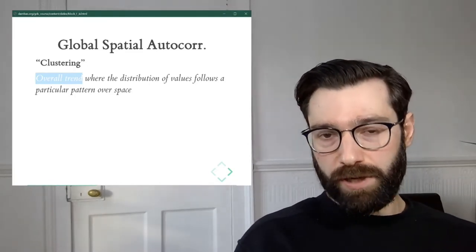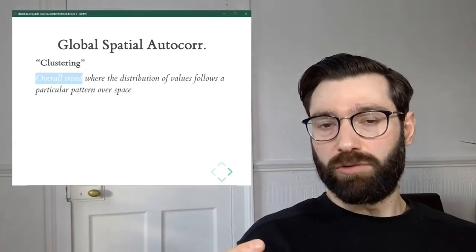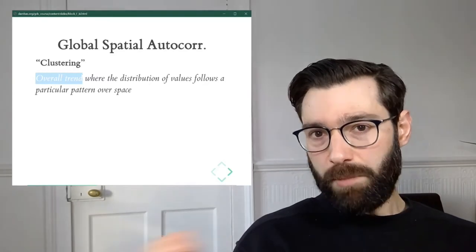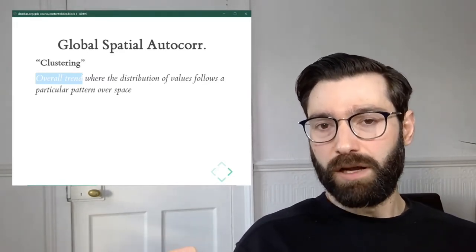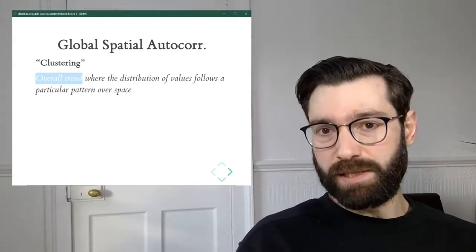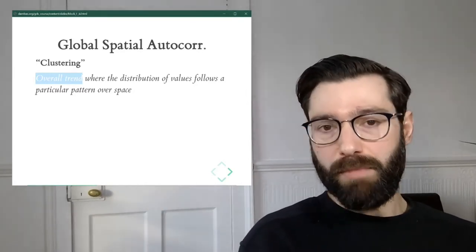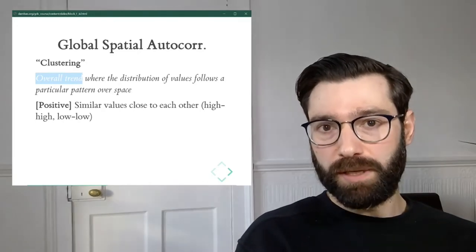Whether on average you can say that a map has clustered or not, whether on average observations that are more similar statistically speaking, in other words values that are similar, tend to be located in either similar places or dissimilar places in a systematic way throughout the map.